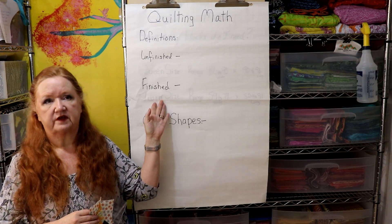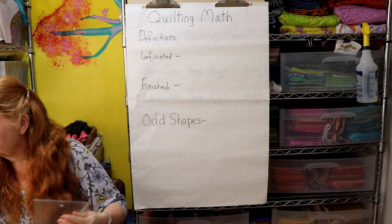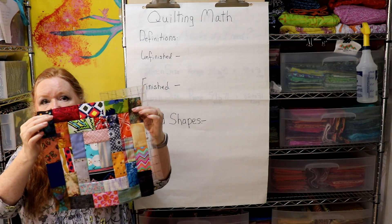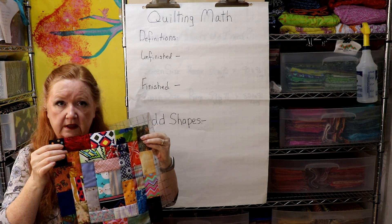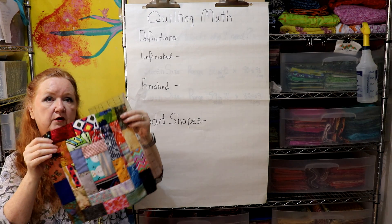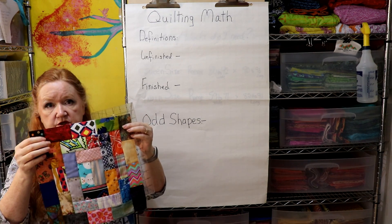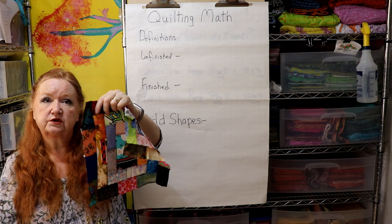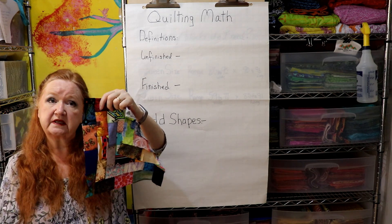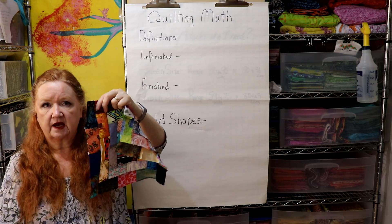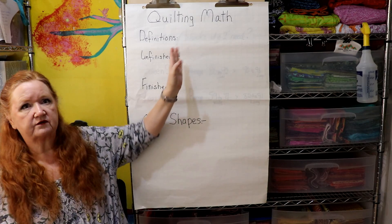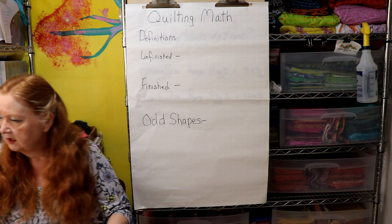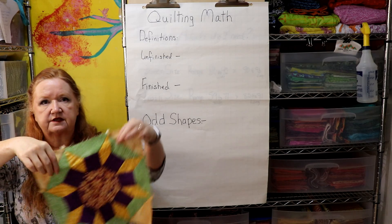Usually a 12 and a half inch unfinished block is considered a 12-inch finished block. For example, the Potato Chip scrappy block measures 12 and a half inches unfinished; inside the quilt it will be 12 inches finished. This block is made up of units that are two inches by three and a half inches unfinished, but in the quilt they finish at one and a half by three inches. So we have to think about whether you're talking finished or unfinished size.